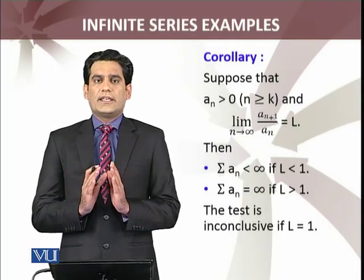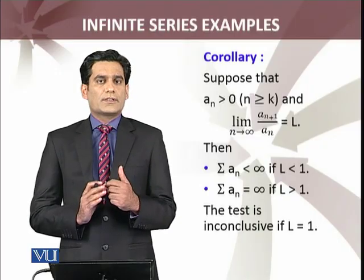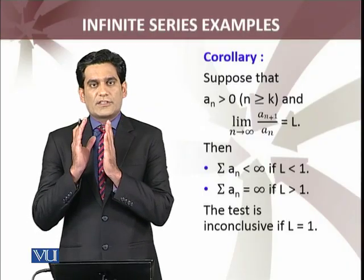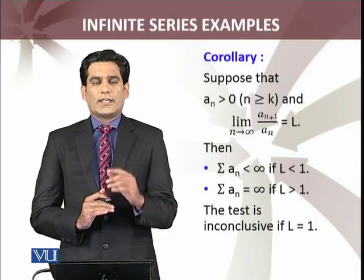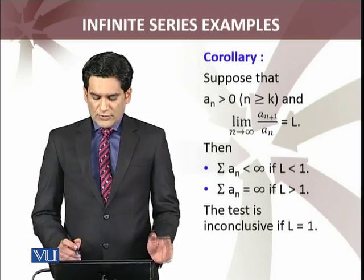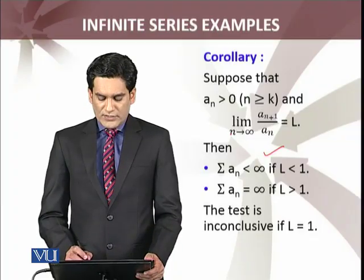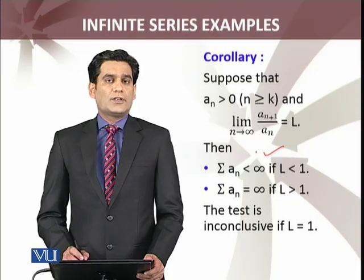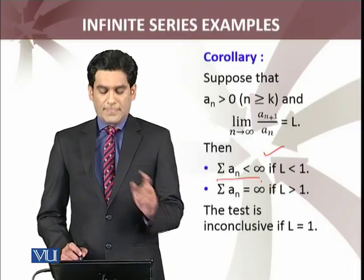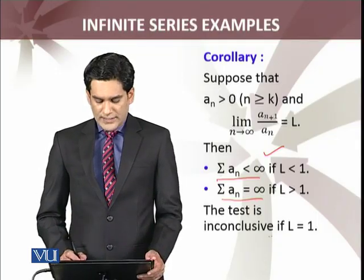So we have applied the ratio test which involves the limit superior and limit inferior to an example. Now the corollary that you are seeing, that is the corollary which you are familiar with and which you have discussed during your courses of calculus. If the limit of a sequence exists, then limit inferior and limit superior are equal. If a(n+1)/an has limit L, then we can translate the ratio test into the familiar form which states that if lim(n→∞) a(n+1)/an = L, then the series will be convergent if L < 1, the series is divergent if L > 1, and the test is inconclusive if L = 1.